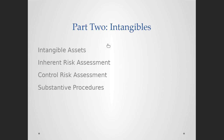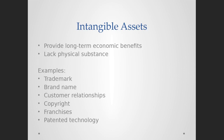The second topic in this chapter is intangible assets. We'll define what they are, discuss the inherent risk assessment, the control risk assessment, and the substantive procedure. Intangible assets provide long-term economic benefits and they lack physical substance — meaning your client gets benefit from the intangible asset but there is no physical substance; it's all paperwork. It's your client's right to get benefit from them.